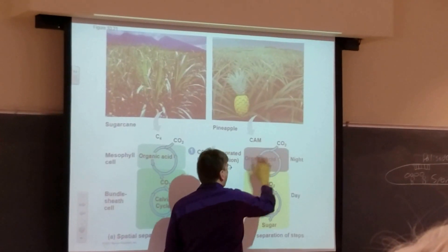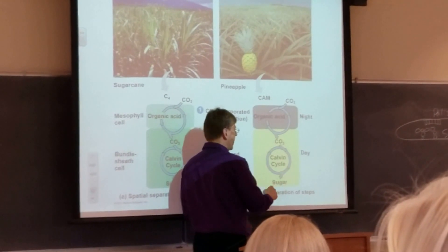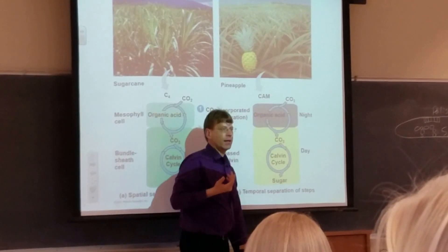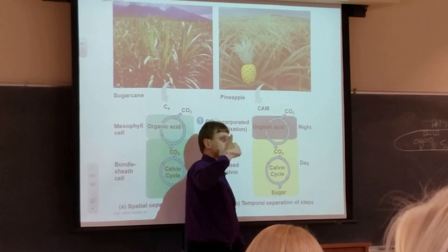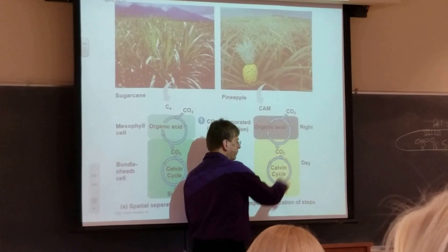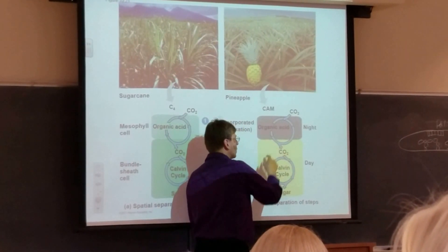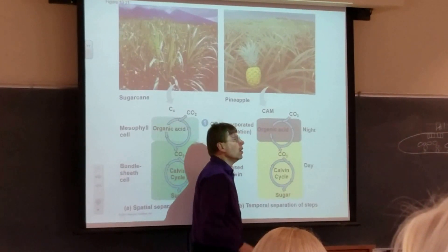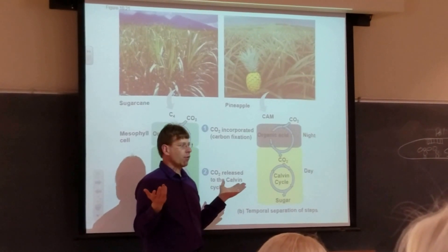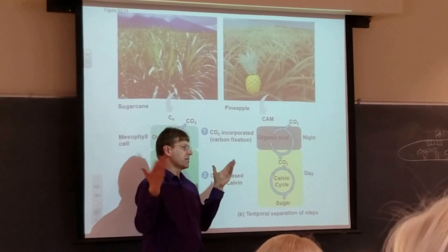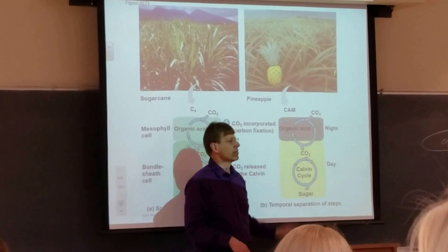They store all these organic acids at night, and then during the day they close their stomata and get CO2 by decarboxylating those 4-carbon compounds in the organic acids. This increases the CO2 concentration in the mesophyll cell during the day, which allows the Calvin cycle to run and RuBisCO to bind CO2 instead of oxygen. They do photosynthesis until they run out of 4-carbon compounds to decarboxylate, so they can only do as much photosynthesis as they have stored CO2.